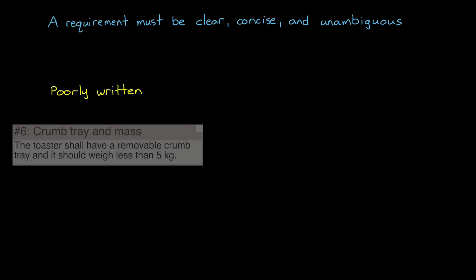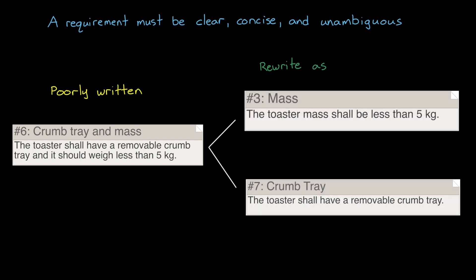For example, a poorly written requirement might be: the toaster shall have a removable crumb tray, and it should weigh less than five kilograms. This is poorly written because not only are there two thoughts here, the crumb tray and the weight, but it's not entirely clear whether it's the tray or the toaster that has to be below five kilograms. It's better to split this up into two requirements that are clear and can each be independently verified.